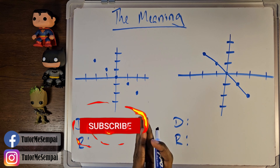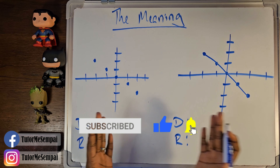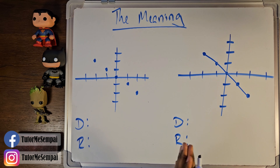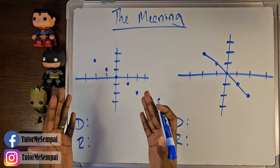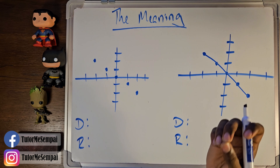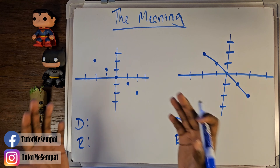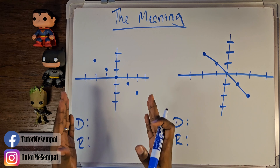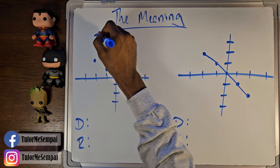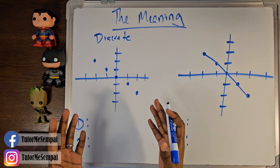When looking at a graph, it will be pretty obvious to tell whether it's a discrete graph or a continuous graph, because your continuous graphs will all be connected, whereas your discrete graphs will not be connected. However, if I was to ask you what makes a graph continuous, could you answer that question? Well, let's look at this graph here. Clearly, this is going to be a discrete graph.